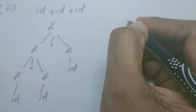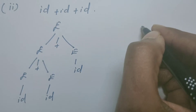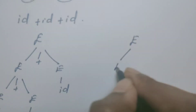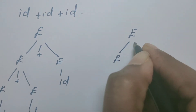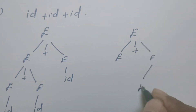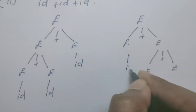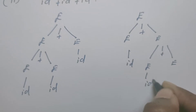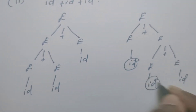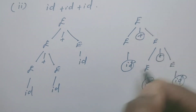I can derive the same string using another parse tree — another derivation exists. That is why we call this grammar ambiguous. E is replaced by E plus E, then this E is replaced by E plus E, and every E is replaced by ID. So the second parse tree also derives ID plus ID plus ID.